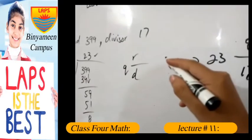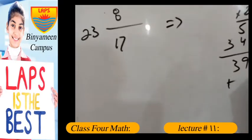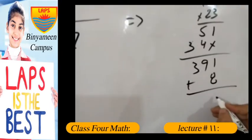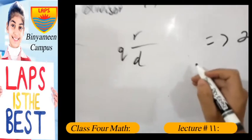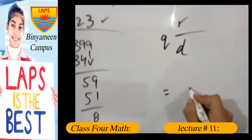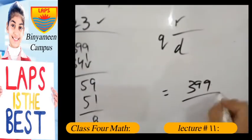So we have to add the remainder. The remainder was 8. If we add 8 to 391, we get 399. And we get the same answer which is 399 divided by 17.